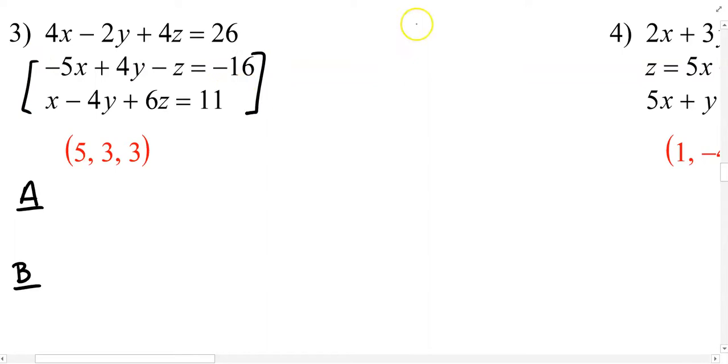I'm going to take these two equations and just add them together. By adding them together, you'll notice that the y variable disappears. So in this case, my A equation end result would be, and I'm adding these two, so negative 5 plus 1 looks like negative 4x to me. Negative z plus 6z looks like 5z to me. And negative 16 plus 11 is equal to negative 5.